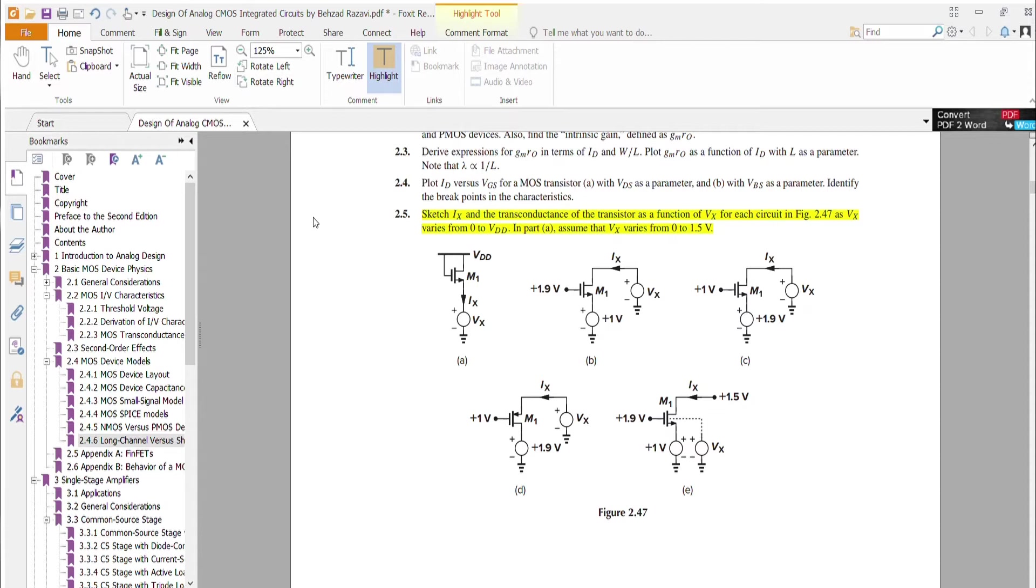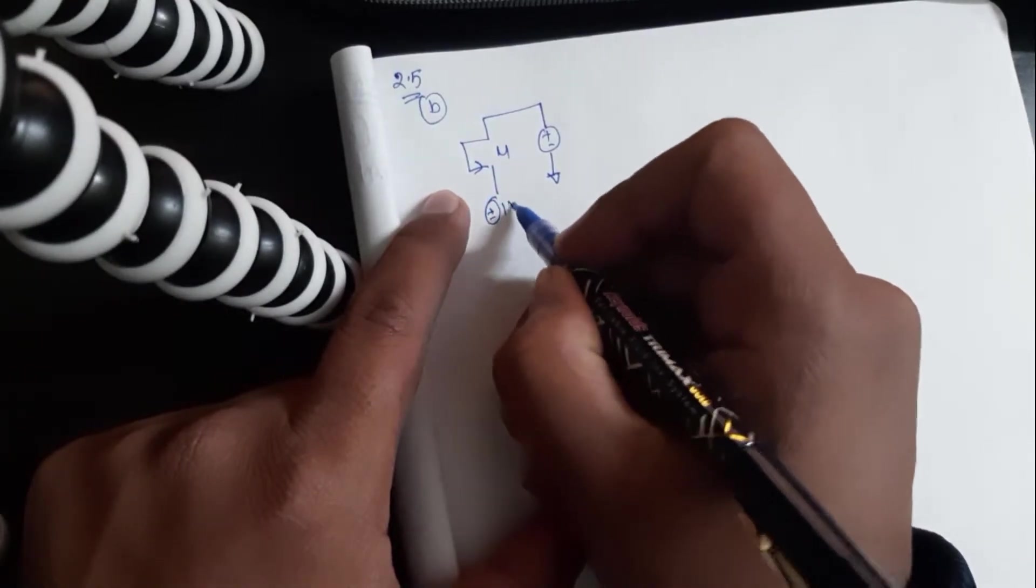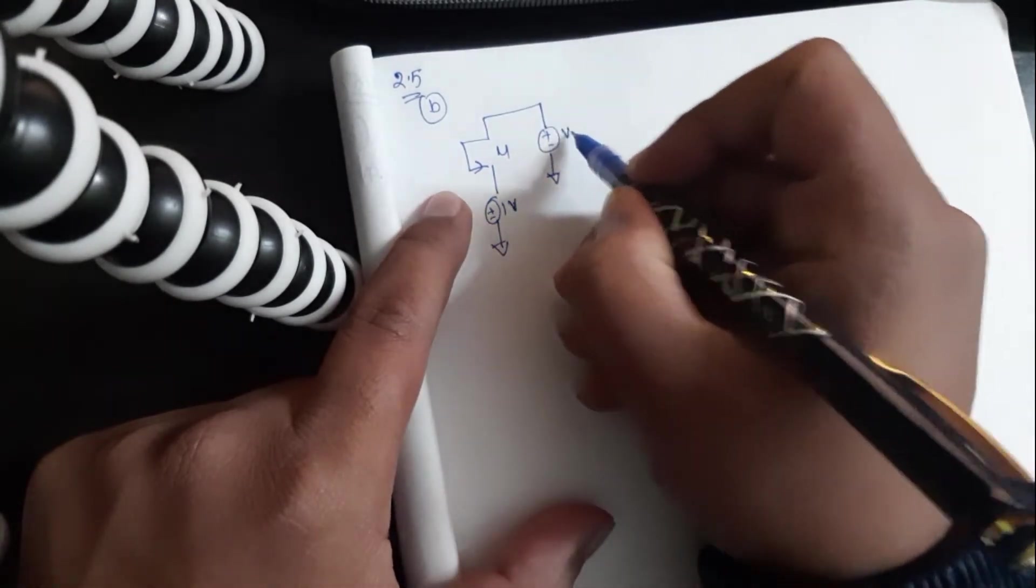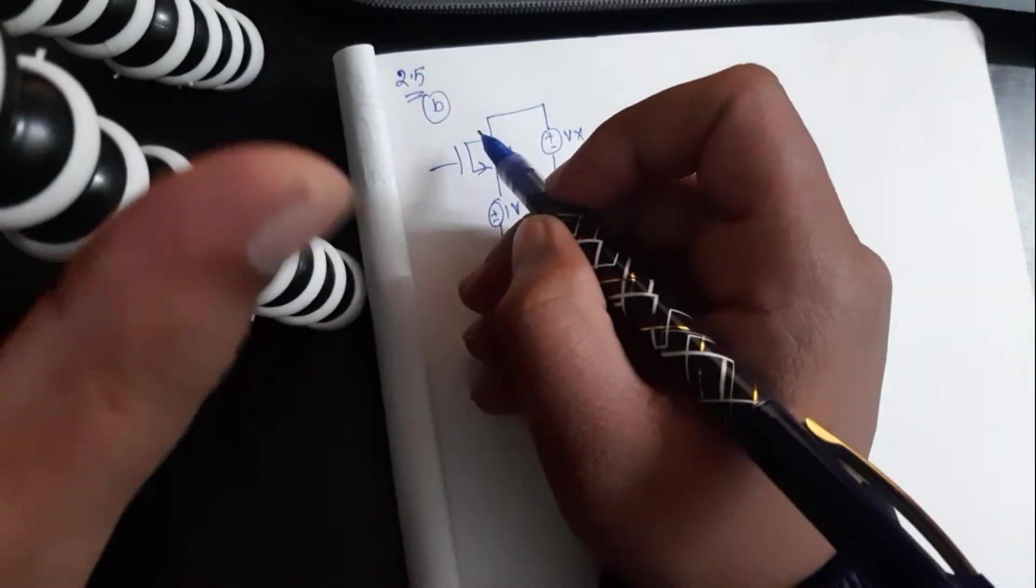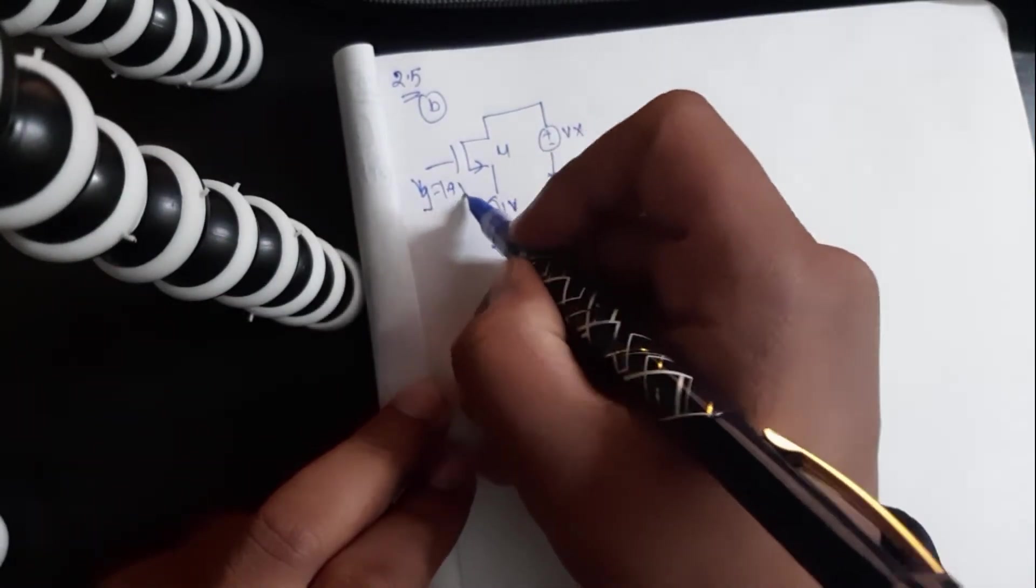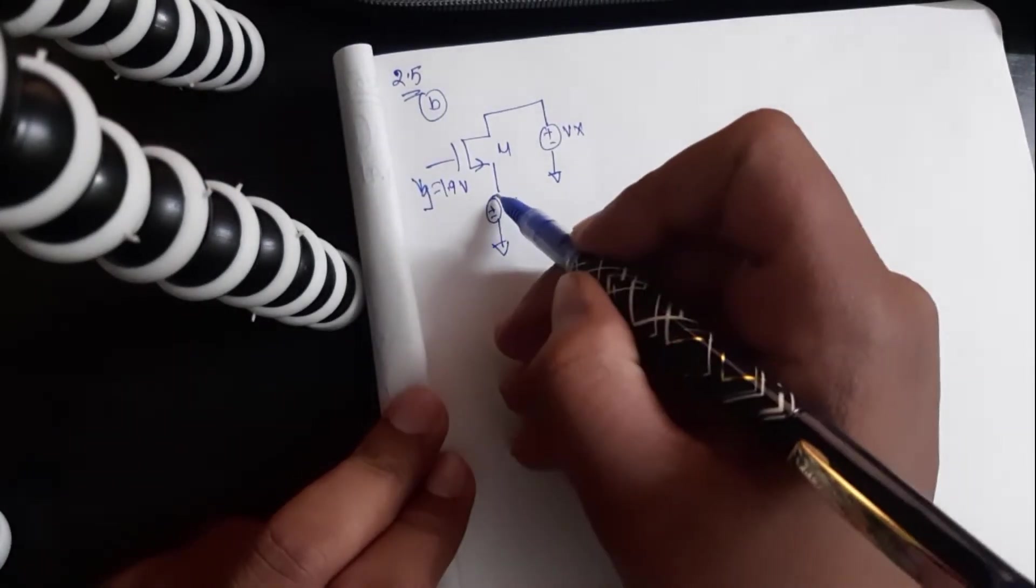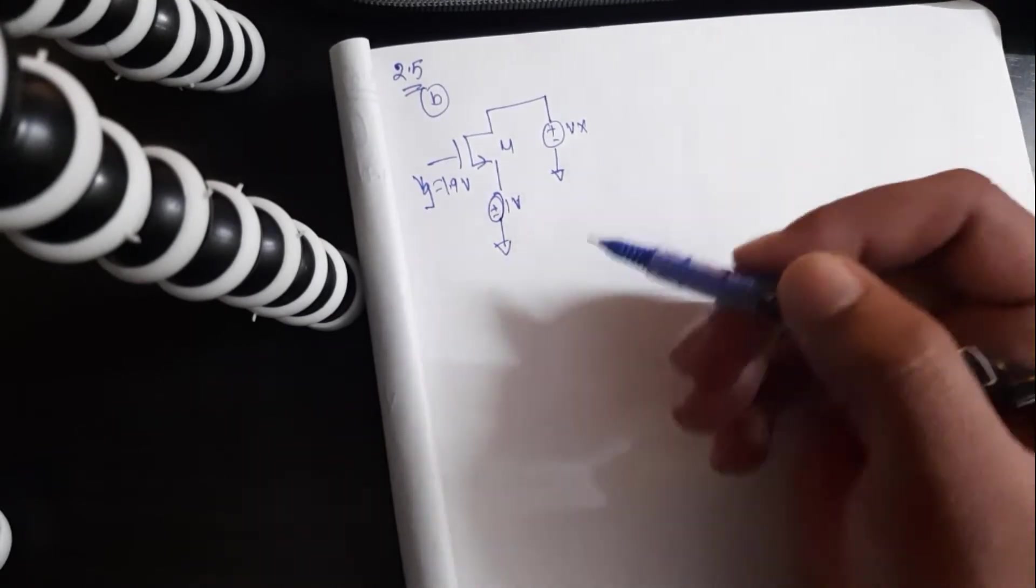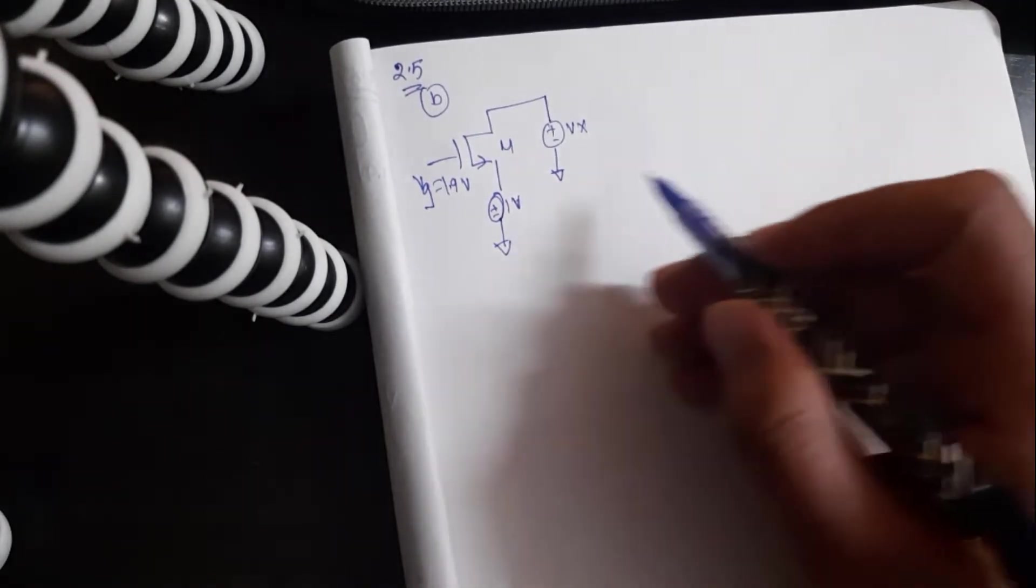So let me start part B of this question where we have an NMOS, one of the terminals is connected to a voltage source and the other is connected to a variable voltage source. Gate voltage is 1.9 volt. This problem is not as straightforward as it looks. I'll tell you why.